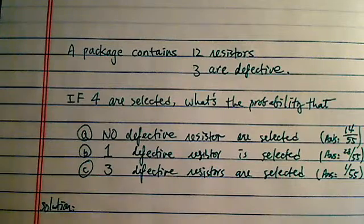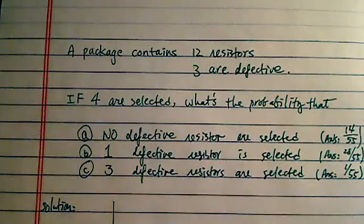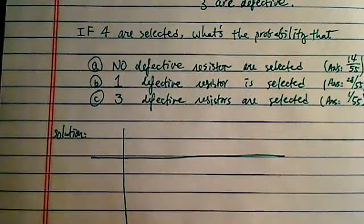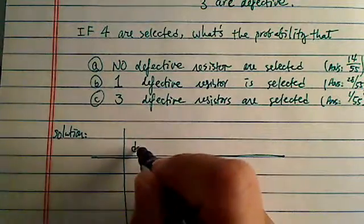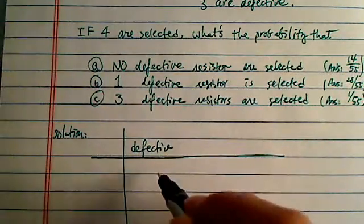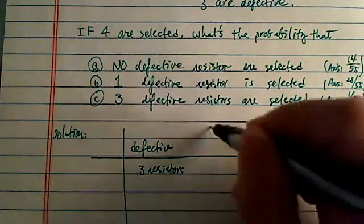So let's take a look at how we're going to solve this. The easiest way and the quickest way is to have a table. Let's set it up. So number of defectives, let's write it defective. I have 3 resistors that's defective.